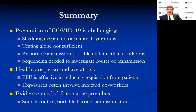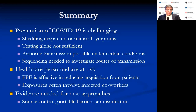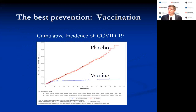In summary, prevention of COVID-19 is very challenging because shedding occurs with minimal or no symptoms and before becoming symptomatic. Testing alone is helpful but not sufficient. Airborne transmission is a real concern in settings like restaurants and public transportation. Healthcare personnel are at risk, but evidence suggests that with appropriate PPE, risk from patients is very low — you're more likely to be infected by a coworker than a patient. New approaches including povidone iodine, portable barriers, and air disinfection require more evidence. Ultimately, the best prevention will be vaccination.